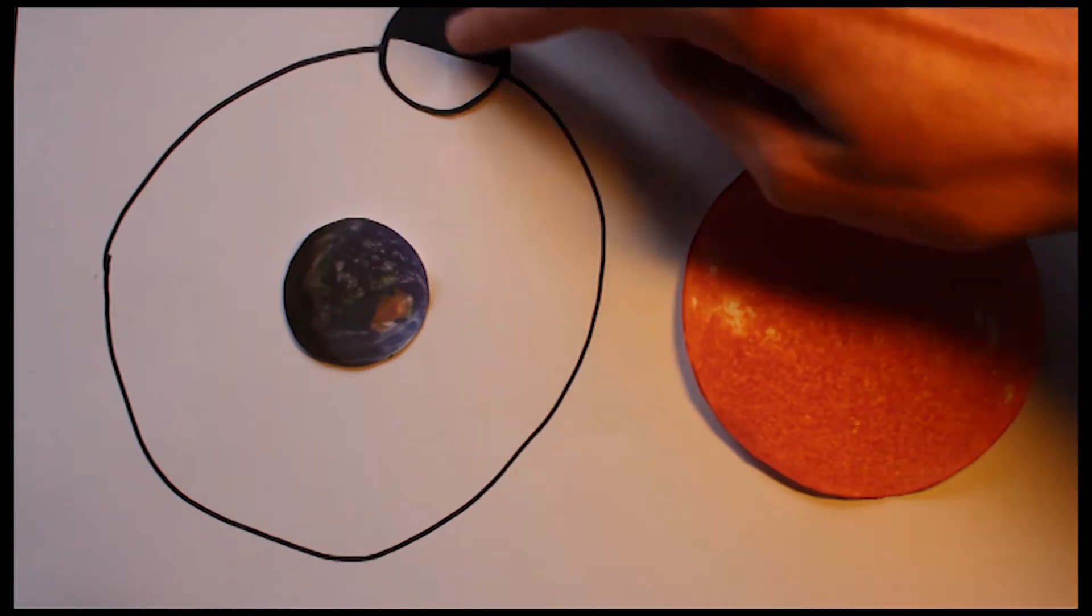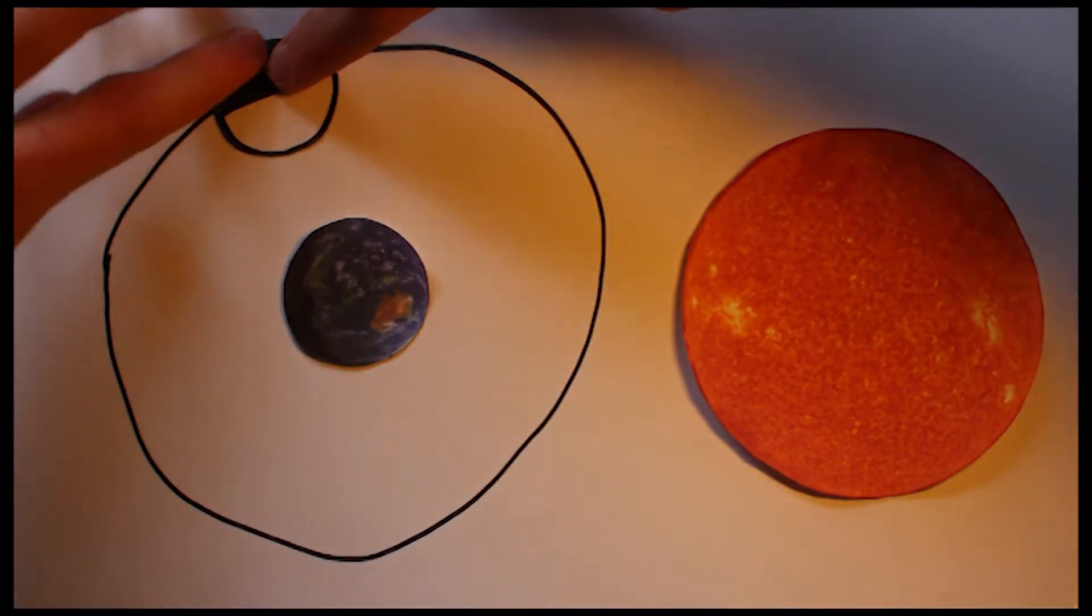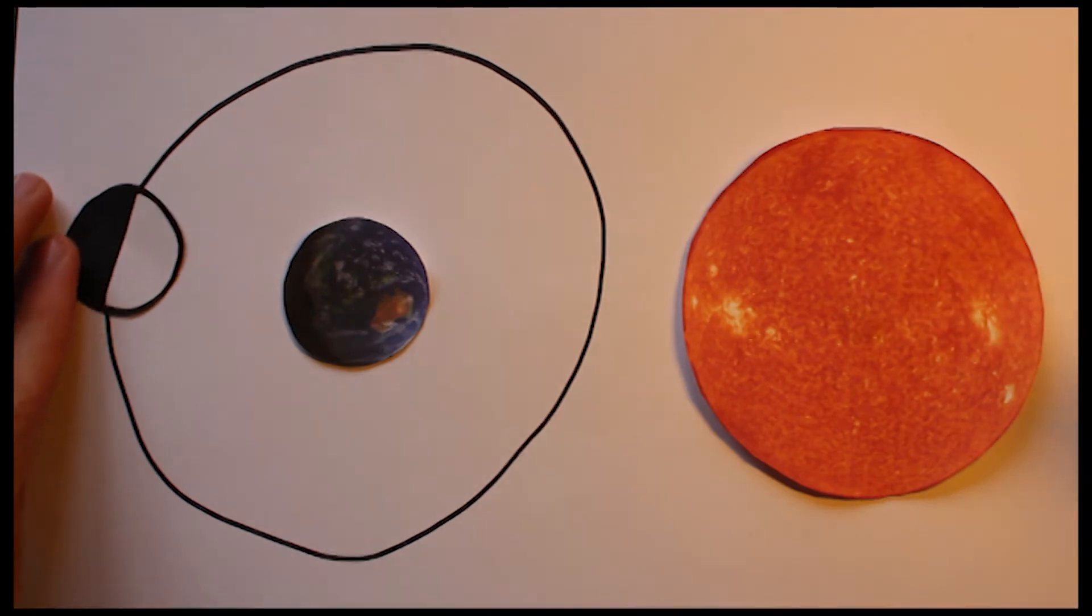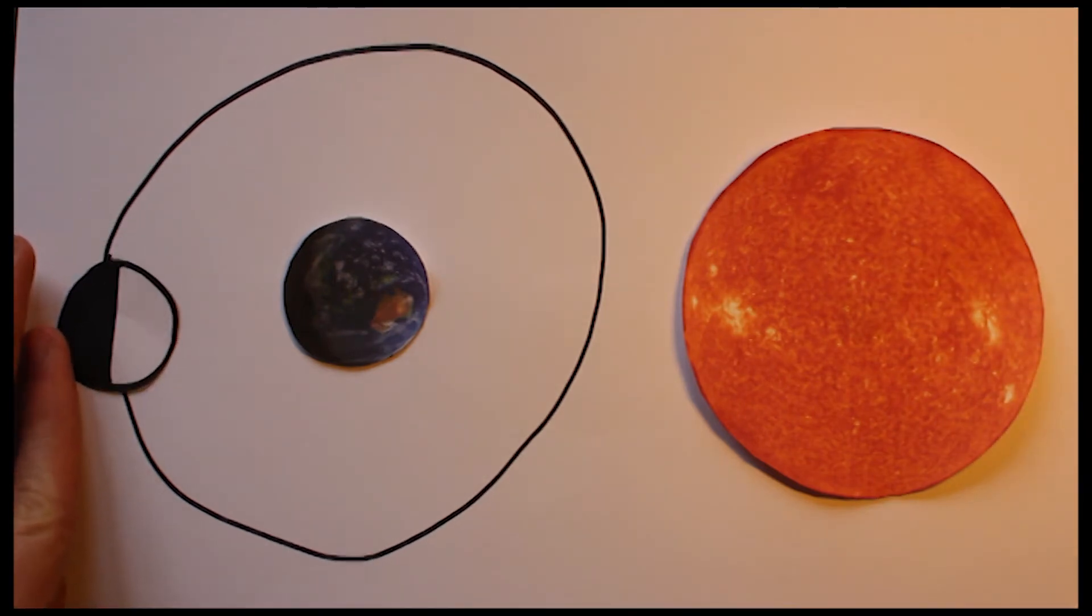To illustrate this, the white half is the face Earth always sees, and the black half is the opposite face. I stress that this is demonstrating why we always observe the same face of the Moon, and not why we see its phases.